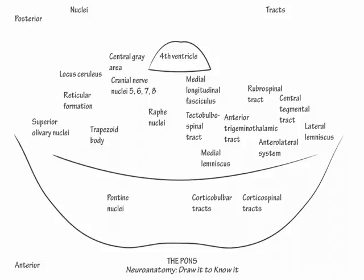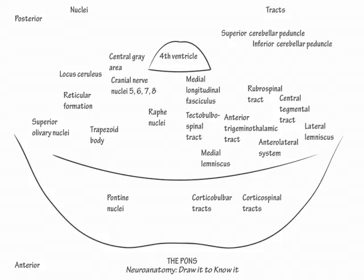Next, draw the extensive cerebellar structures that attach to the pontine tectum. First, show the brachium conjunctivum of the superior cerebellar peduncle, and then the inferior cerebellar peduncle, which comprises the restiform and juxta-restiform bodies. The superior cerebellar peduncle is functionally associated with the midbrain, and the inferior cerebellar peduncle with the medulla.